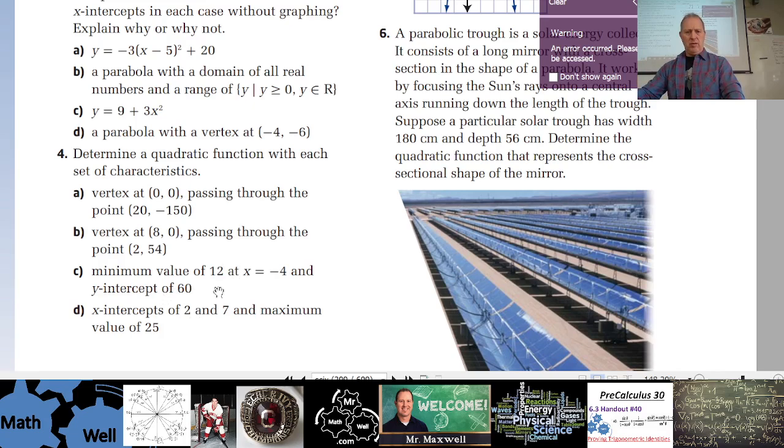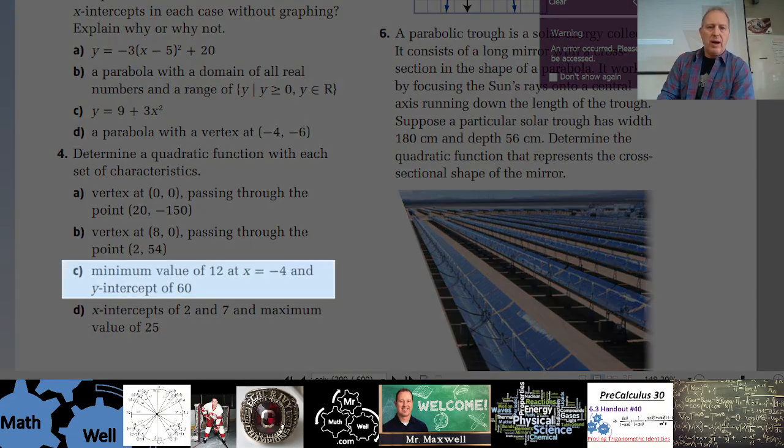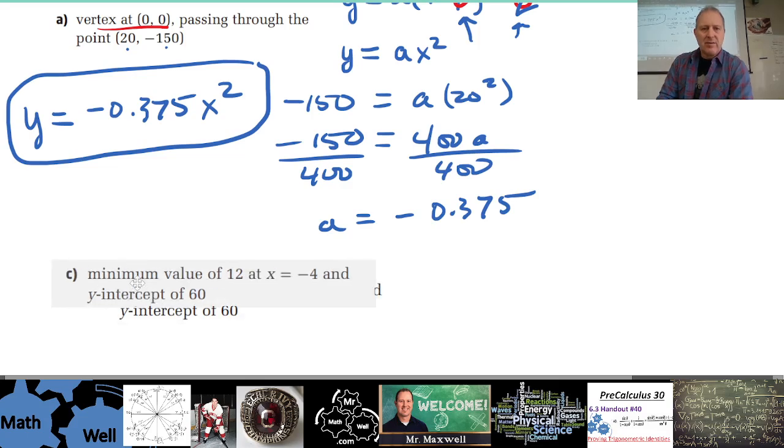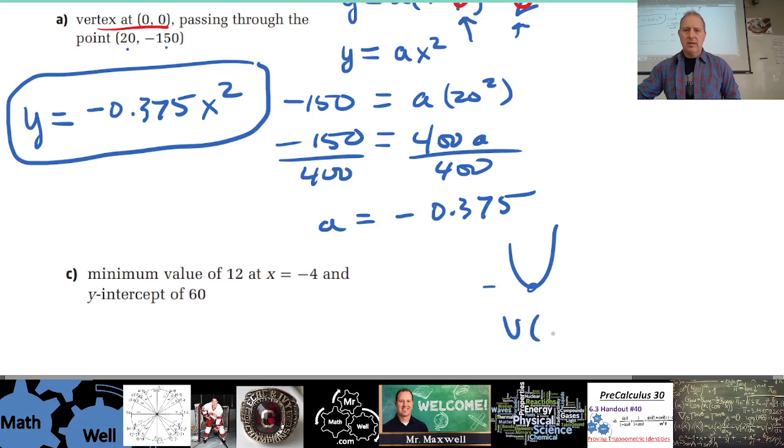So minimum value at 12, so that's a vertex, a y value of the vertex at 12, right? Minimum value. Minimum value of 12, so that means that somewhere the vertex is something 12, right? Something 12. Oh, minimum value of 12 at x equals -4. Oh, -4 right there. Does that make sense? Yep. Okay, at x equals -4, good.